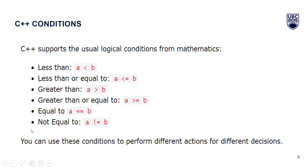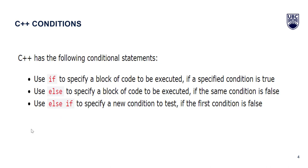We can use these conditions to perform different actions for different decisions. C++ has the following conditional statements. We can use the if statement to specify a block of code to be executed if a condition is true. We can use else to specify a block of code to be executed if the condition is false. We can use else if to specify a new condition to test if the first condition is false.